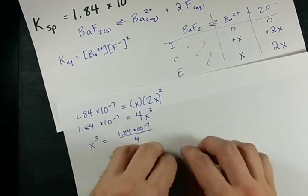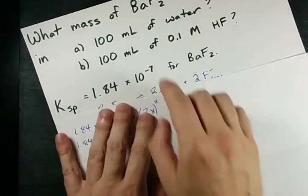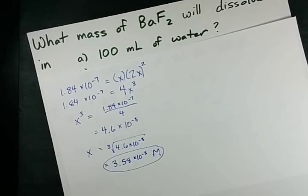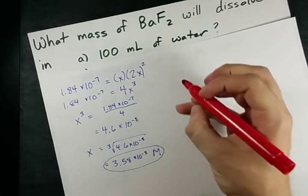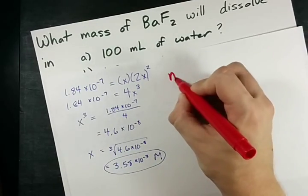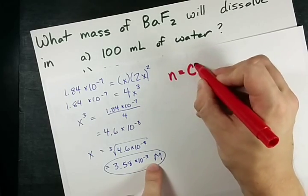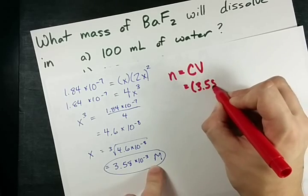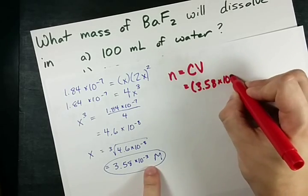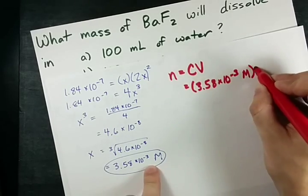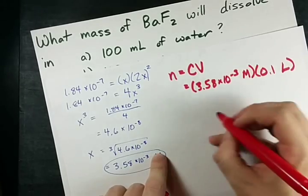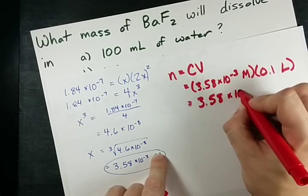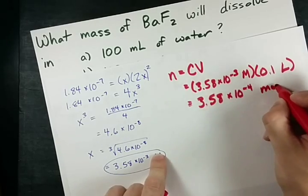Most of the time I could stop there. If I was asked for the solubility, I'd be done. But I want the mass that dissolves in 100 milliliters of water. So, the number of moles that dissolve in 100 milliliters of water is concentration times volume. That's my 3.58 times 10 to the minus 3 moles per liter times 0.1 liters. That gives me 3.58 times 10 to the negative 4 moles.